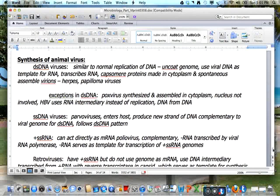The single-strand DNA viruses, such as the parvoviruses, enter the host and produce a new strand of DNA complementary to the viral genome to produce the double-stranded DNA and then follows the double-stranded DNA pattern.